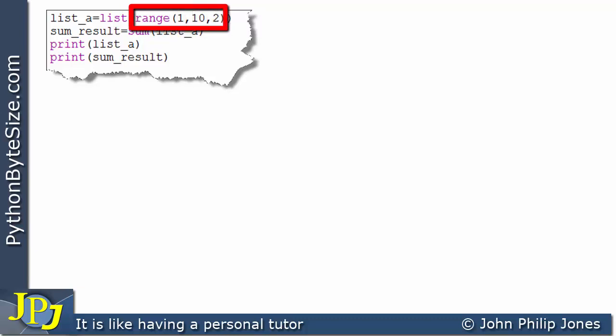What this will do is produce 1, 3, 5, 7, and 9. You can see we're converting that to a list, so this name is bound to that list.